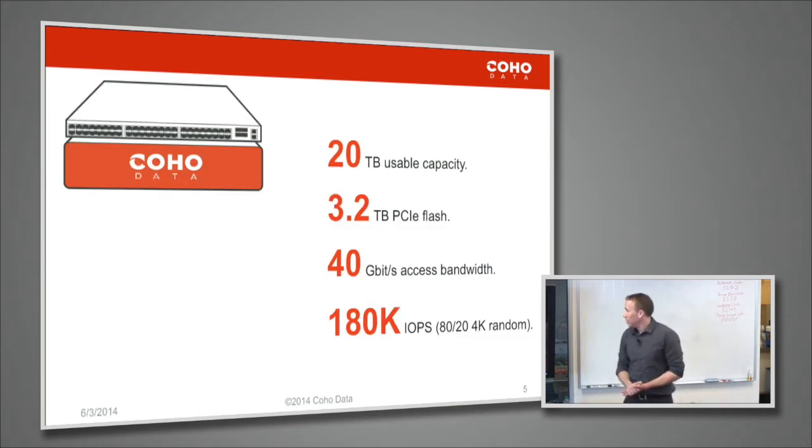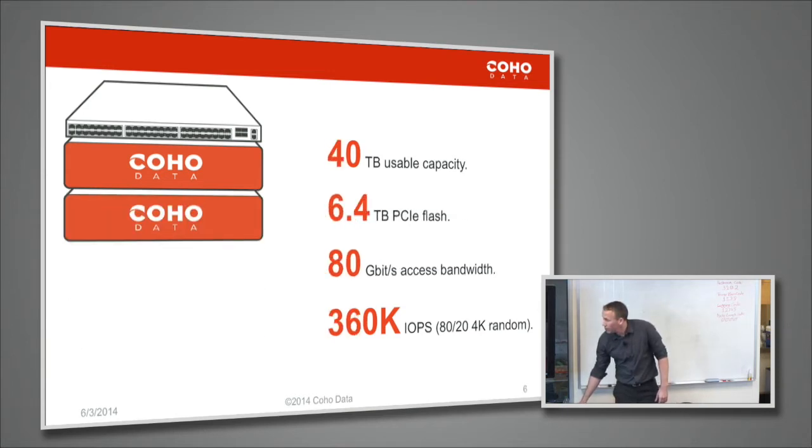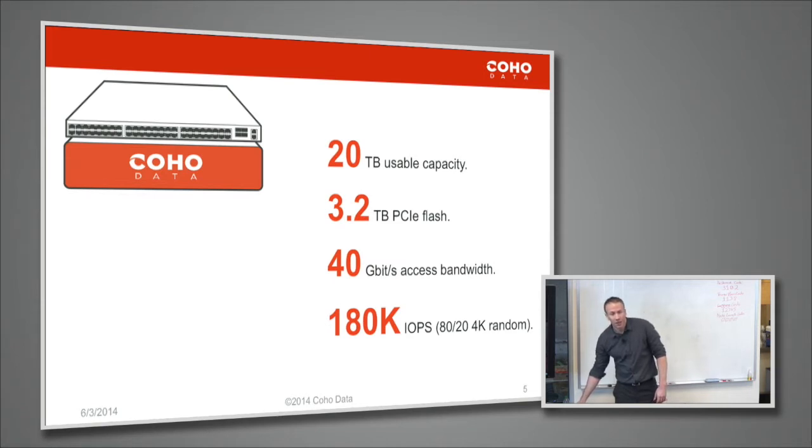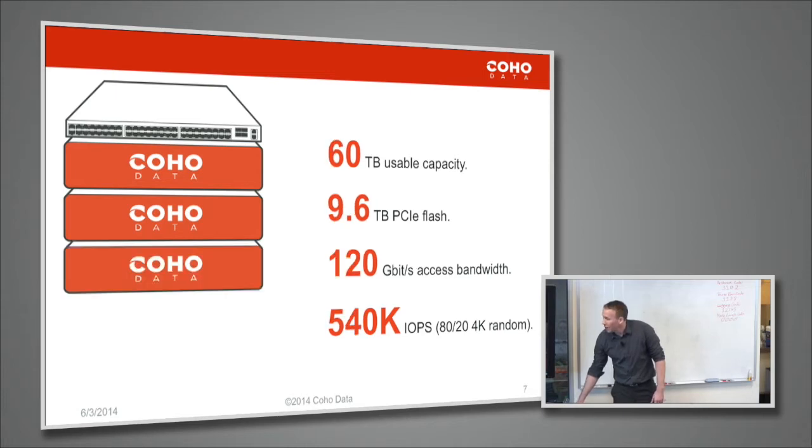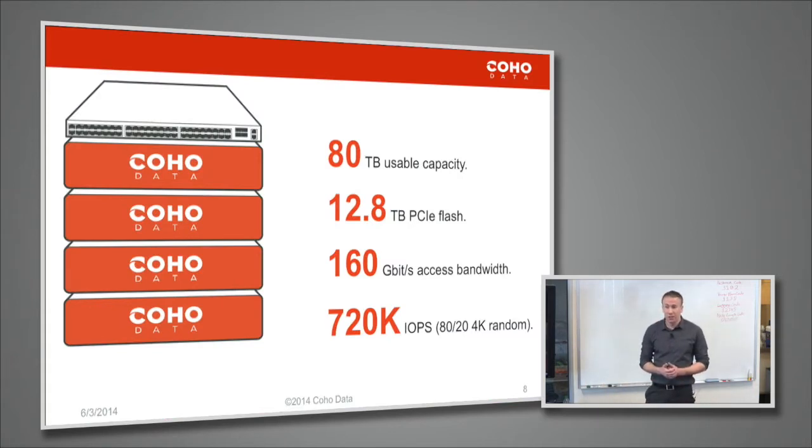Fast numbers: in that 2U, 20 terabytes usable replicated data, 3.2 terabytes of PCIe flash, 40 gigabits of access bandwidth, 180k non-BS IOPS. This is 80-20 full random 4k IO, replication on the write path. And it just scales like that. The idea is you buy and deploy like this, you decide you like it, and you scale up. You adjust your provisioning to match your needs. At the end of the day, the system is designed so all your active data lives in flash and we'll work very hard to tell you when it doesn't. Cold data moves out to disk as we go.